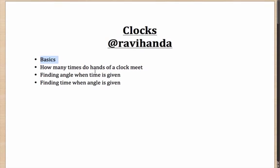We'll also discuss how many times the hands of a clock — that is the minute hand and the hour hand — meet. We'll find out methods to calculate the angle when the time is given, and also the other way around: finding out the time when the angle is given, such as 20 degrees, 30 degrees, or any degree.